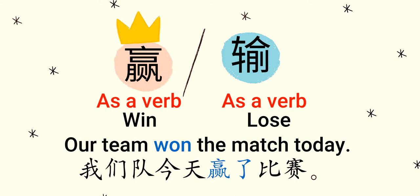The two words I'm focusing on today: the first word is 'to win' in Chinese. When we see the pinyin in the next slide, you will identify the pronunciation. It is yíng — yíng as a verb with a second tone, meaning 'to win.' The second word is shū with a first tone — shū as a verb meaning 'to lose.'